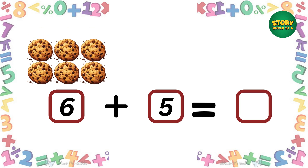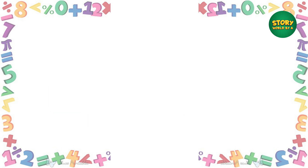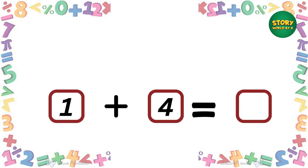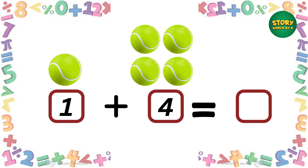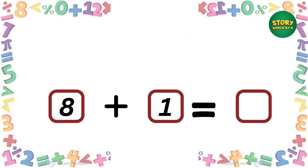That's right! We have six cookies — if we add five more cookies, how many do we have? That's right, eleven cookies! We have one ball — if we add four more balls, how many do we have? That's right, five balls!